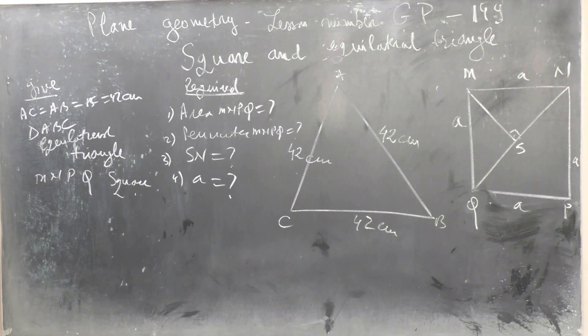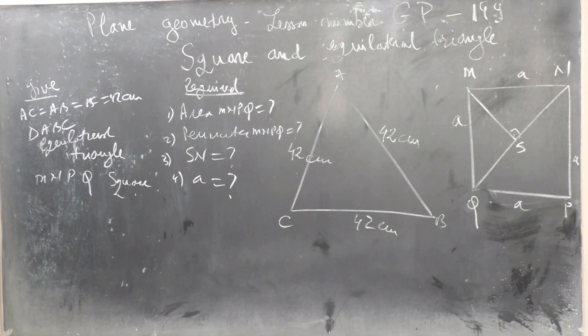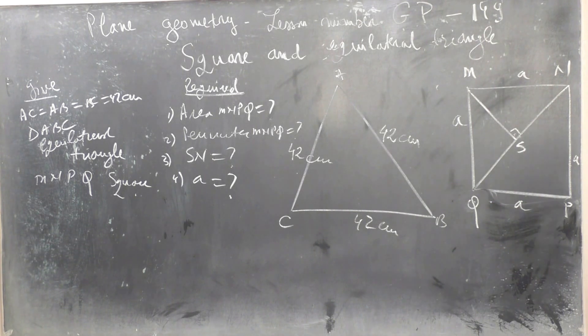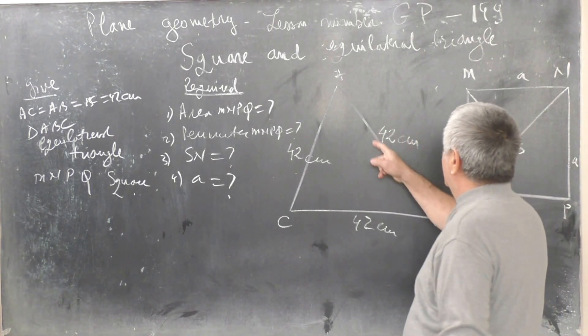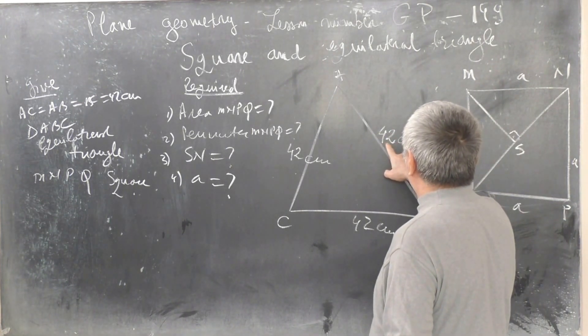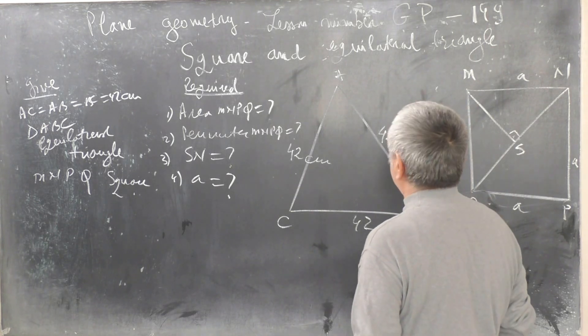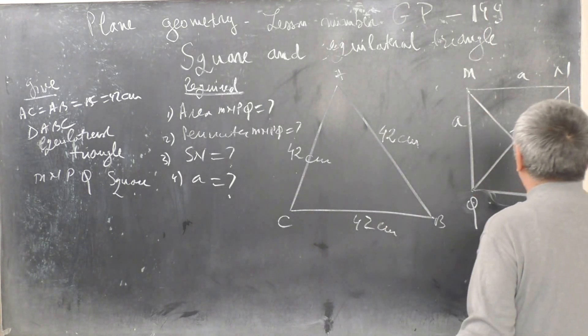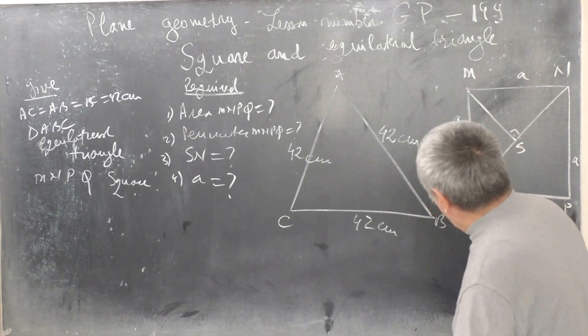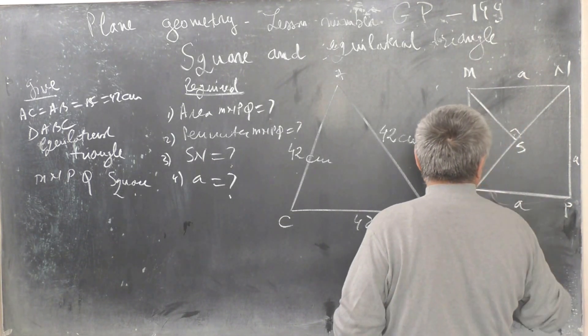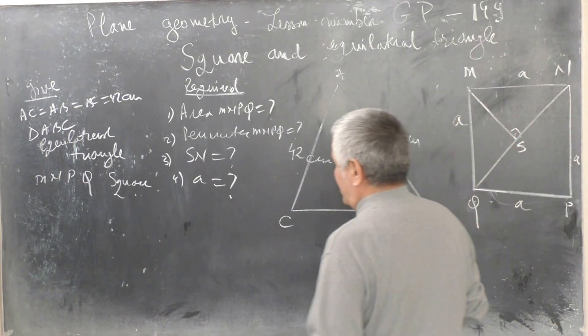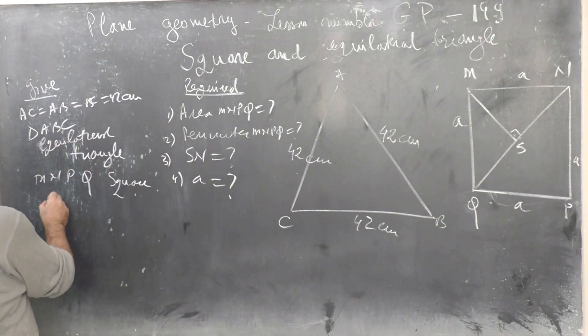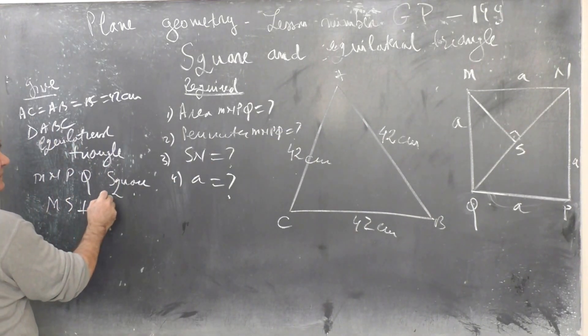Given triangle equilateral triangle ABC, side equal 42 cm, and square MNPQ, side A. And MS perpendicular to MQ.